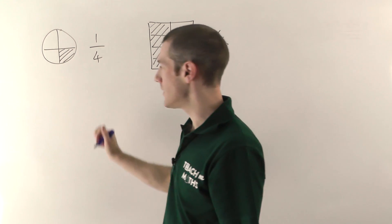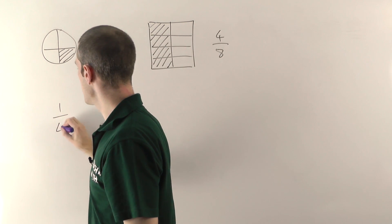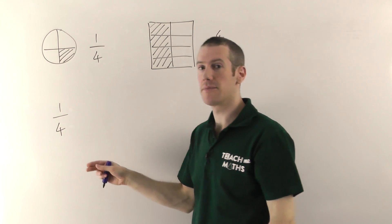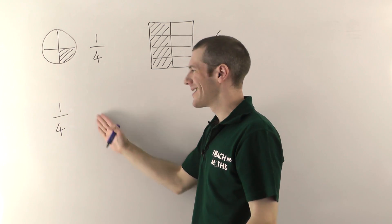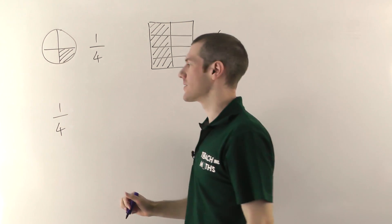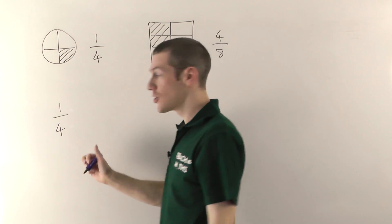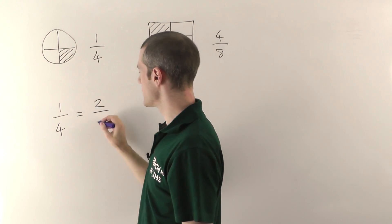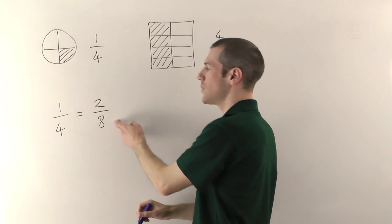If we take a quarter, then it's possible to multiply the top and bottom of this quarter by another number, and you can change it into different numbers, but really it's the same fraction. So if I times the top and bottom of this by two, so two ones are two, two fours are eight, I get two-eighths.